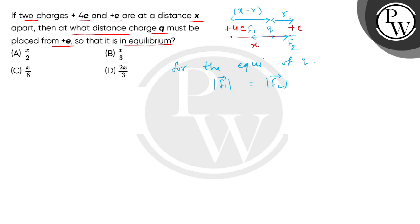So f1 can be represented by Coulomb's law as 1 by 4π epsilon 0, then multiplied by e times q divided by r square. This equals 1 by 4π epsilon 0 multiplied by 4e multiplied by q divided by (x minus r) bracket square.